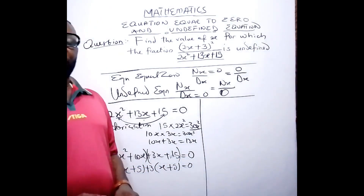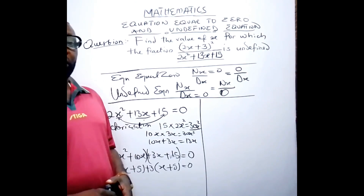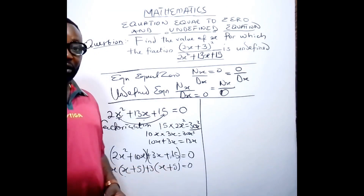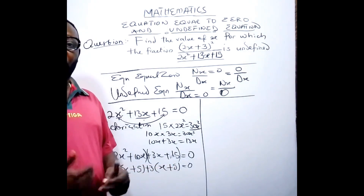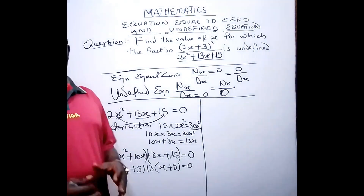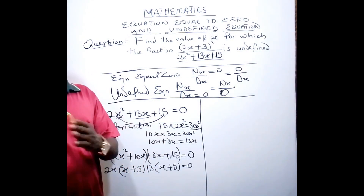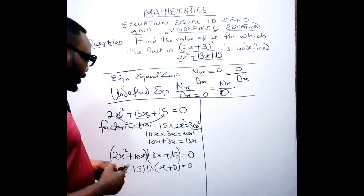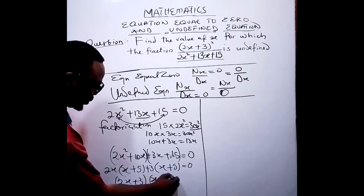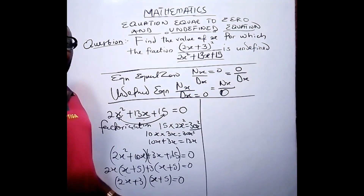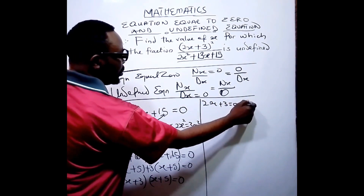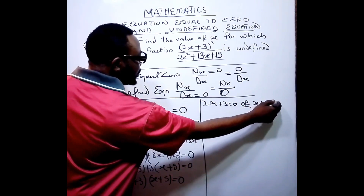When using the factorization method, at this stage you must note that the value inside both brackets must be equal to each other. If they are not equal, it means something in your working is wrong. Now taking the terms outside the brackets together and one of the bracketed values: we have (2x + 3)(x + 5) = 0. This means either 2x + 3 = 0 or x + 5 = 0.